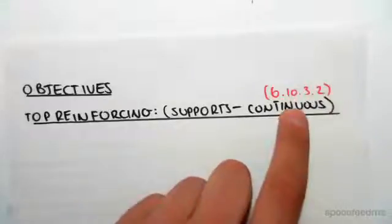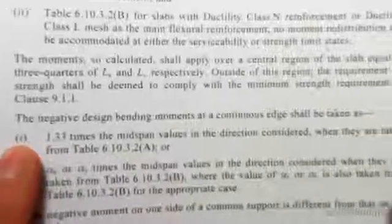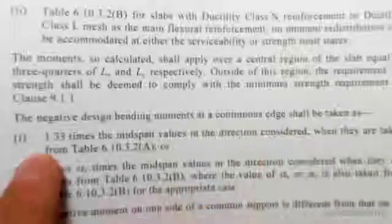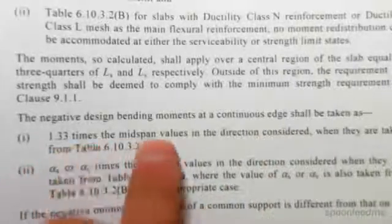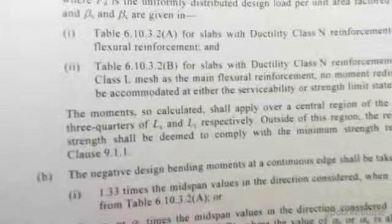So 6.10.3.2, the design bending moments. If you come down to section B, it says, I'll zoom in, the negative design bending moments at a continuous edge shall be taken as 1.33 times the mid span values in the direction considered when they're taken from table 6.10.3.2a.